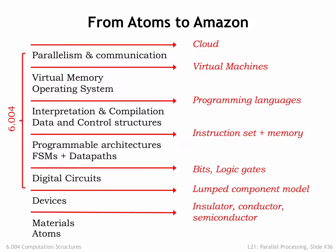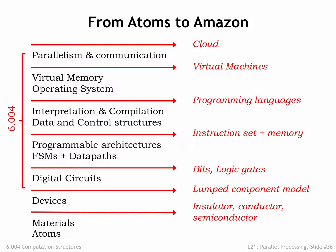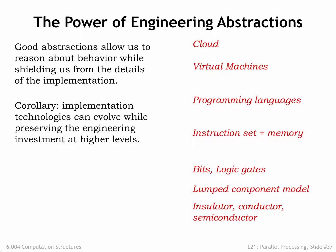For example, the symbolic logic described by George Boole in 1847 is still used to reason about the operations of digital circuits you and I design today. The power of engineering abstractions is that they allow us to reason about the behavior of a system based on the behavior of the components without having to understand the implementation details of each component. The advantage of viewing components as black boxes implementing some specified function is that the implementation can change as long as the same specification is satisfied.